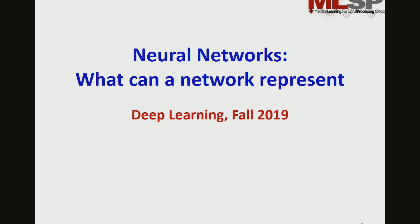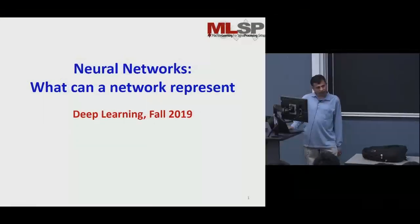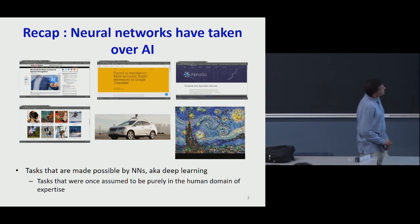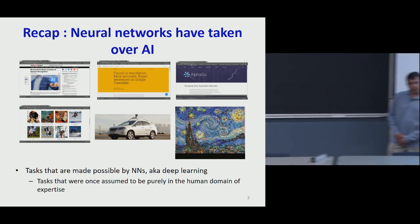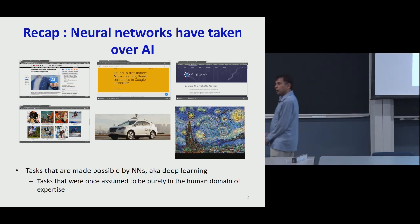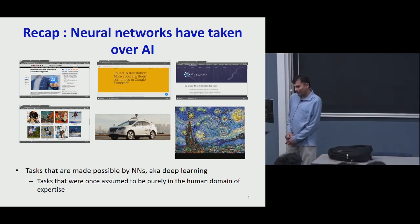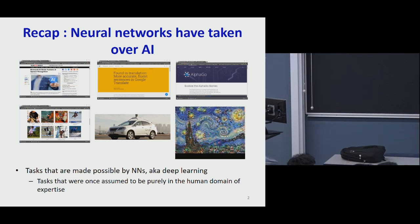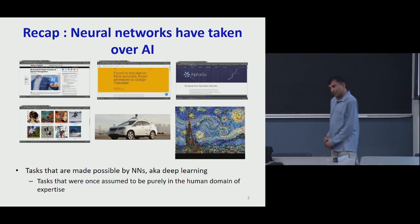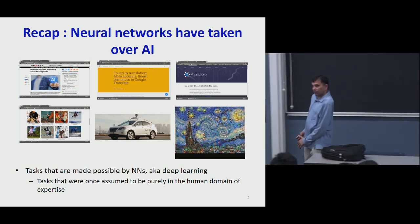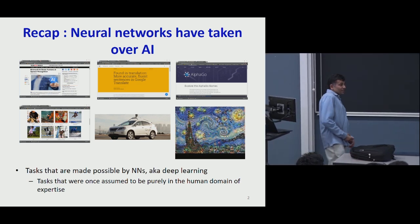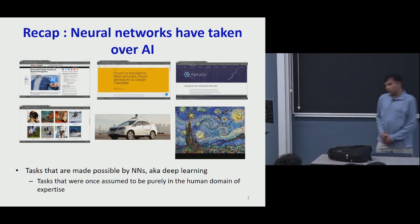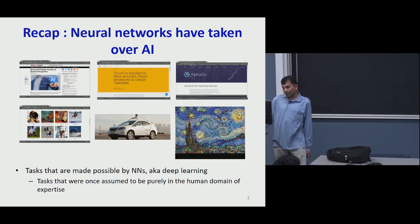We're going to continue exactly where we left off, but here's a quick recap of everything we looked at in the first class. Neural networks have taken over most AI tasks these days — from speech recognition, machine translation, interpreting images, guiding self-driven cars, the computer vision that powers them, and even creative things like drawing art. All of these things, previously assumed to be purely in the domain of human expertise, have been taken over by neural networks.